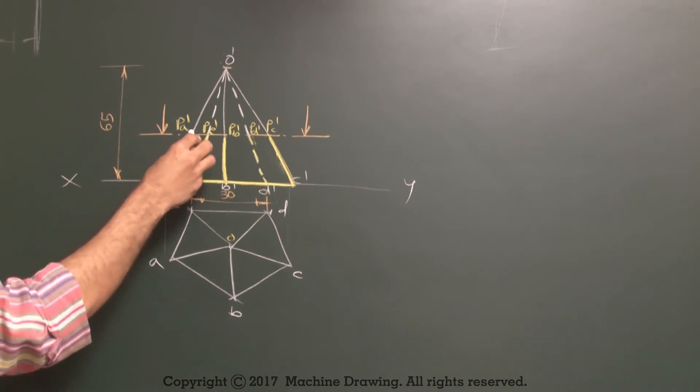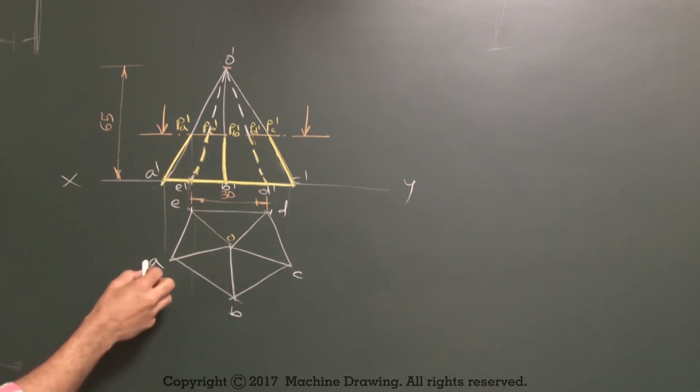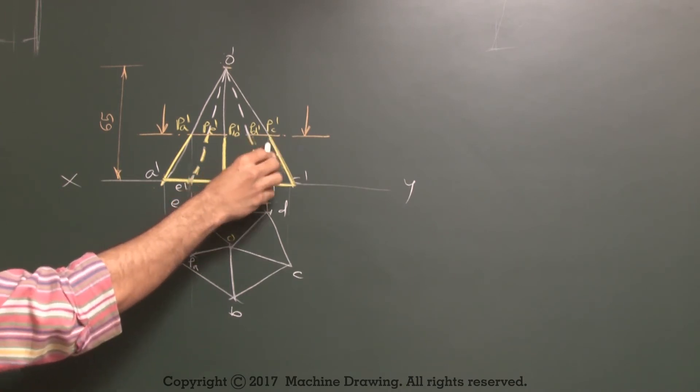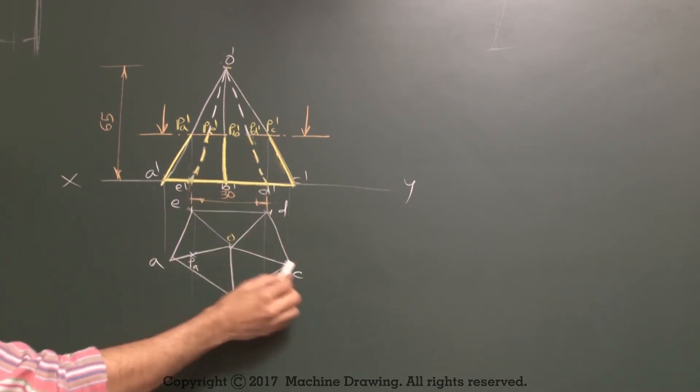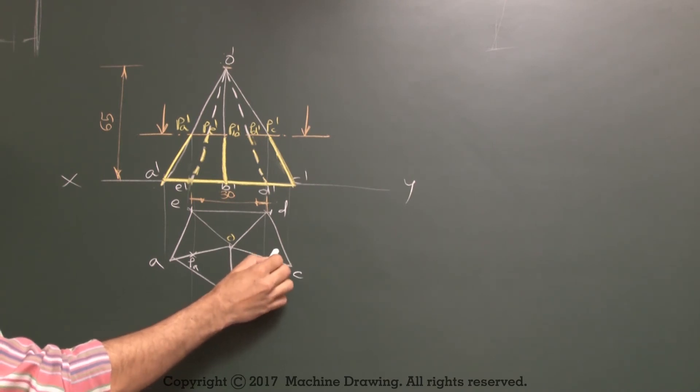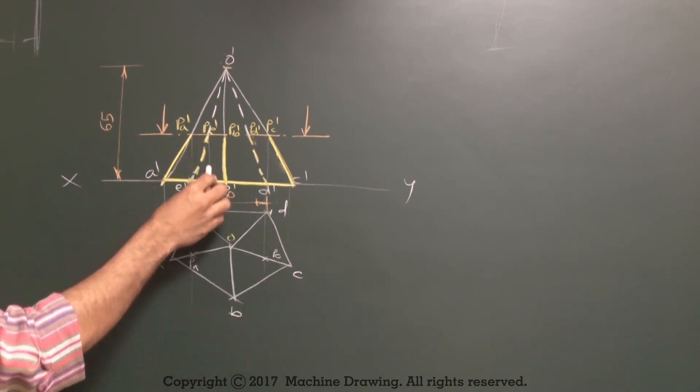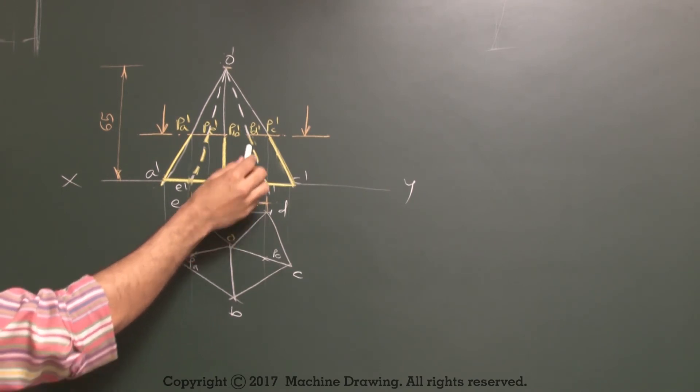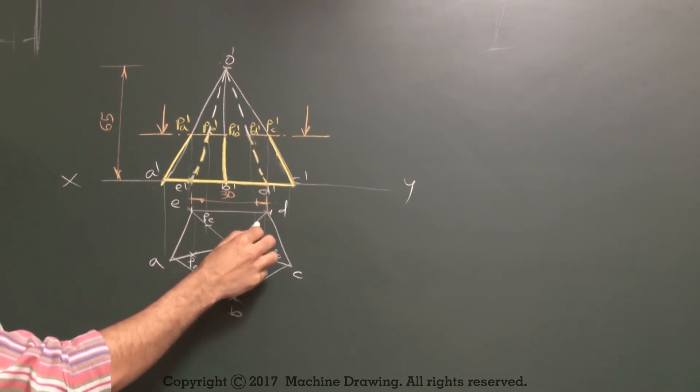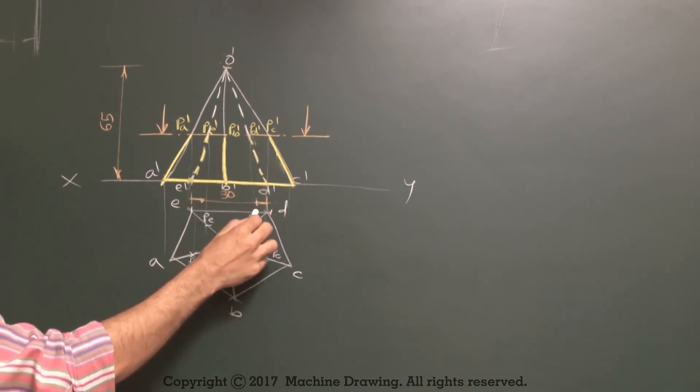Now you project PA dash from here. Wherever it cuts on OA, that will be point PA. PC dash from here, wherever it cuts on OC, that is point PC. PE dash from here, wherever it cuts that is point PE. PD dash, wherever it cuts on OD, that is point PD.